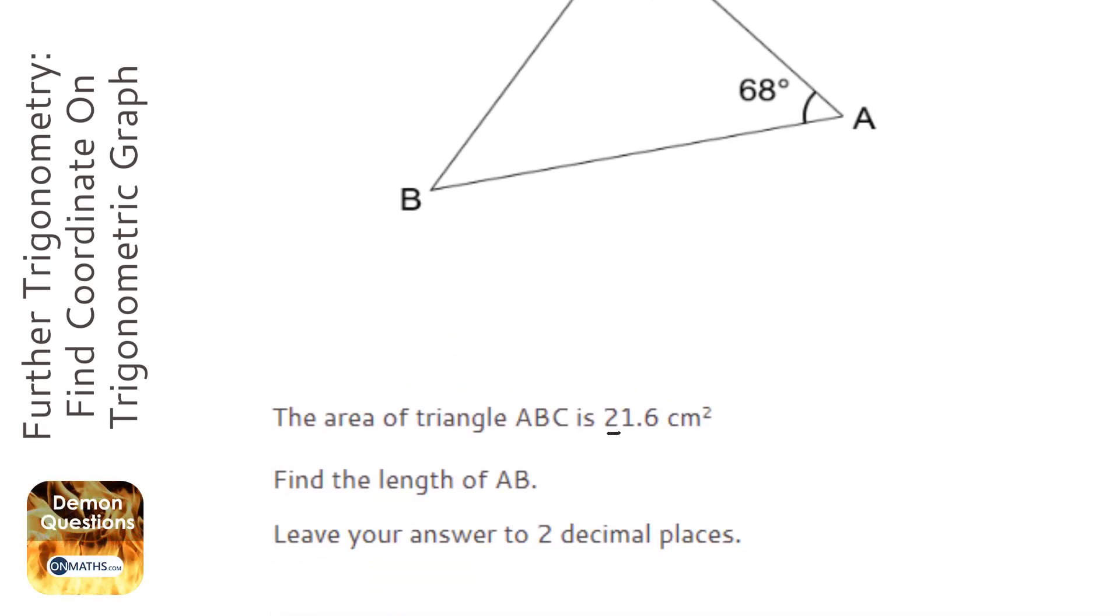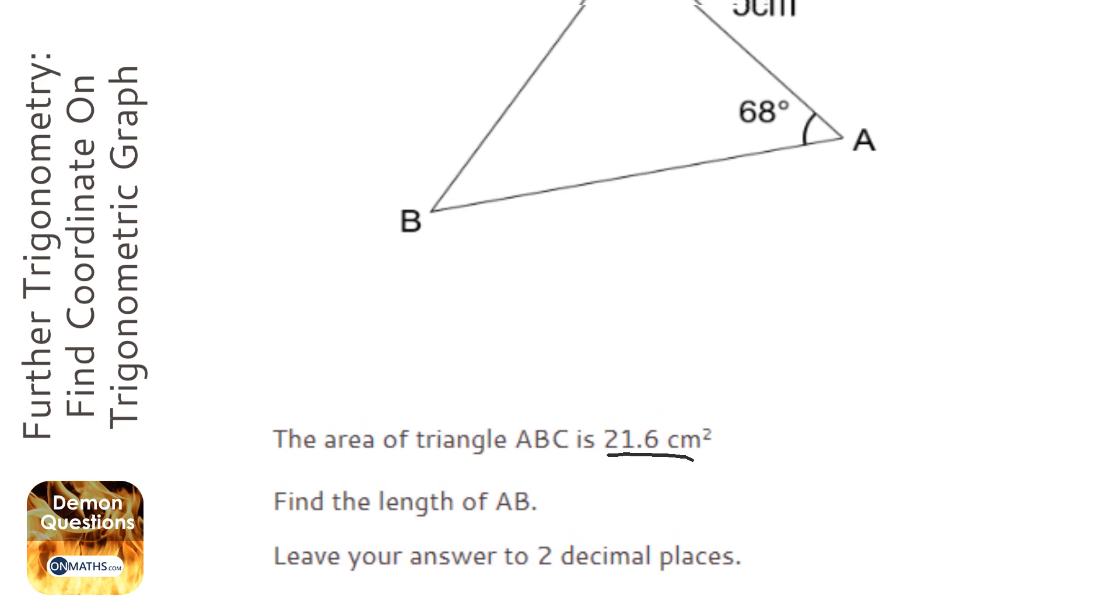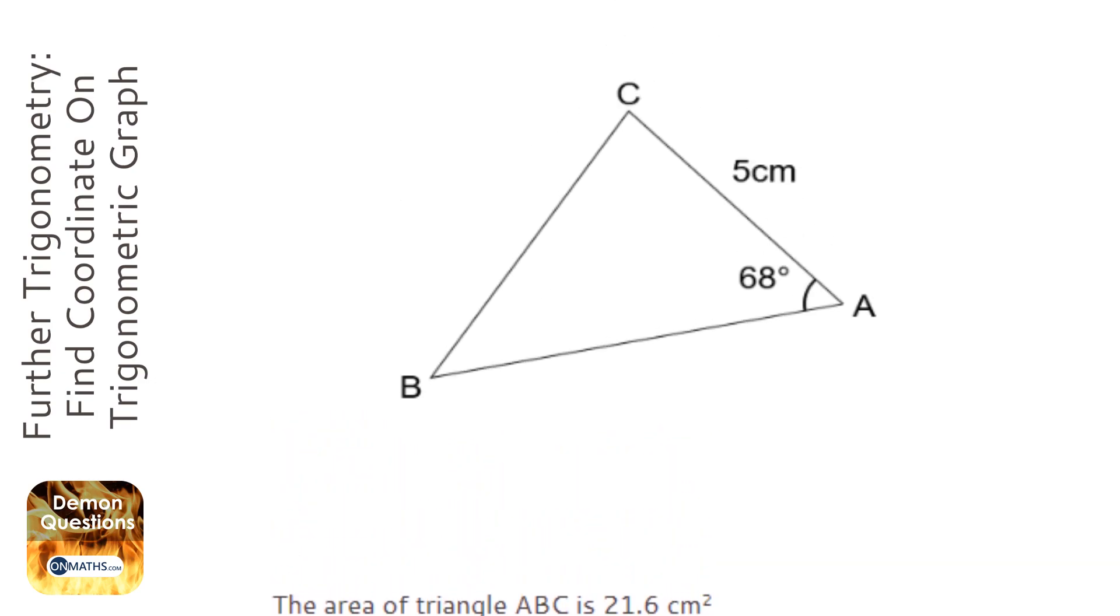We're given the area in this question and we're asked to find a length, so we need to first write down the formula for area of a triangle, and it is half a b sine C.